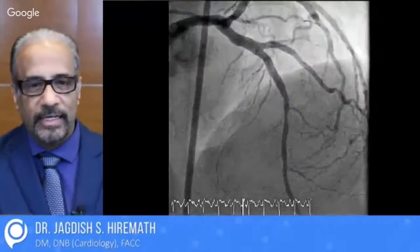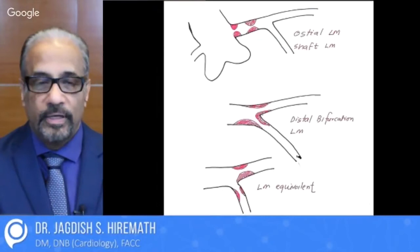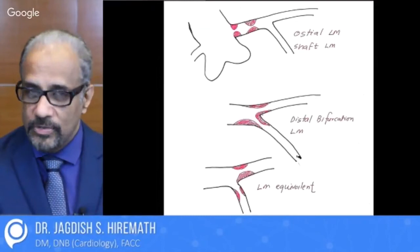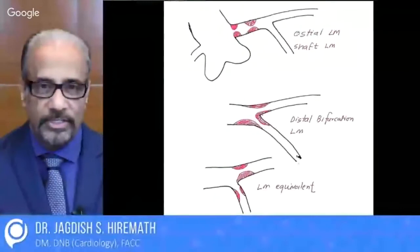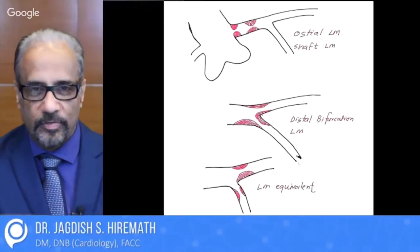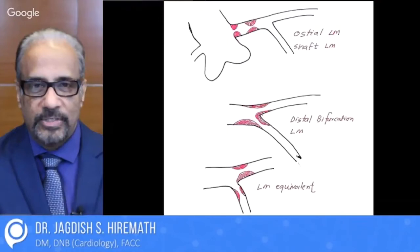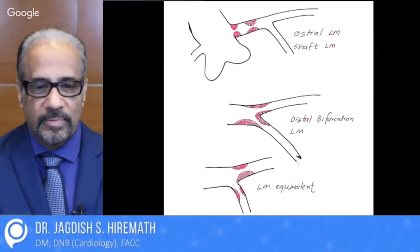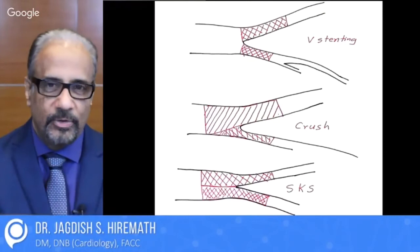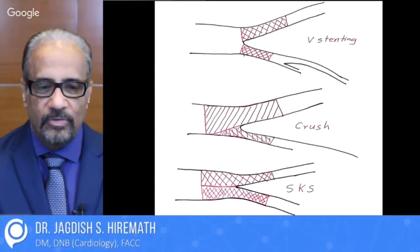When it comes to left main angioplasty, it could be right at the ostium — a very simple angioplasty to do — or a shaft, which is also simple. But when it comes to the distal bifurcation left main, it takes a cardiologist worth their salt to do this kind of bifurcation. It's a difficult technique; you have to be perfect in result. The chance of error is zero because if something goes wrong with the stent, it can result in sudden death. There could be left main equivalence — meaning only the distal branches have proximal lesions. For this also, we can use V-stenting, crush stenting, or a simultaneous kissing technique called the SKS.